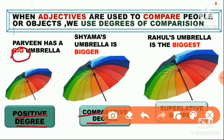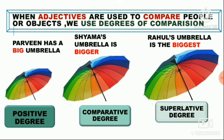The last is superlative. Super word se hi pata chalta hai ki wo sabse jyadha bera hai. Rahul's amrela is the biggest — Rahul ke amrela se aur bera koi bhi amrela nahi hai. So to summarize: positive hoga jab hum big bolte hai, comparative mein er add hota hai — bigger — and superlative mein est add hota hai — biggest.